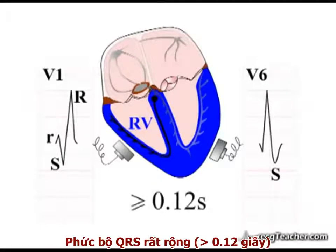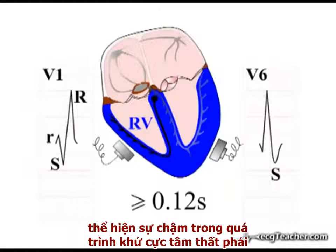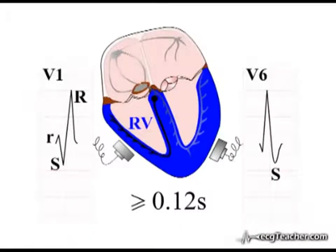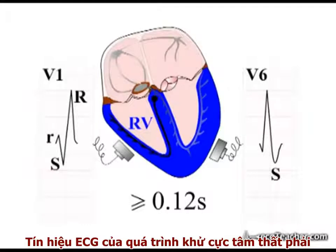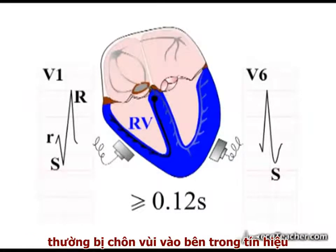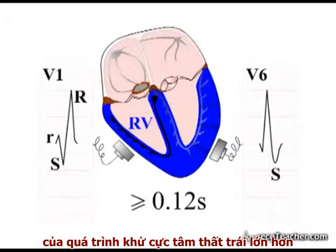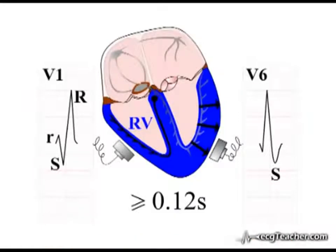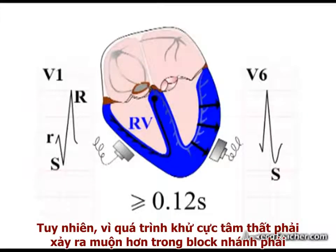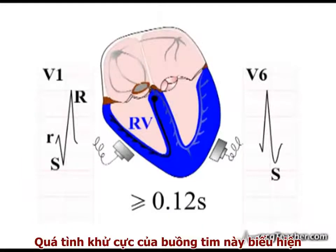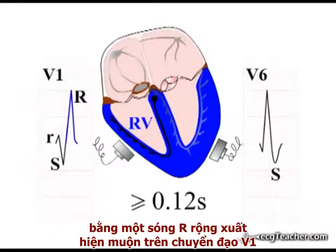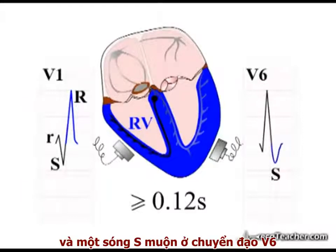The QRS complex is broad, reflecting the delay in right ventricular depolarisation. The ECG signal of right ventricular depolarisation is normally masked by the signal from the much larger left ventricle. However, as right ventricular depolarisation is delayed in the presence of right bundle branch block, depolarisation of this chamber manifests as a delayed broad R wave in lead V1 and an S wave in lead V6.